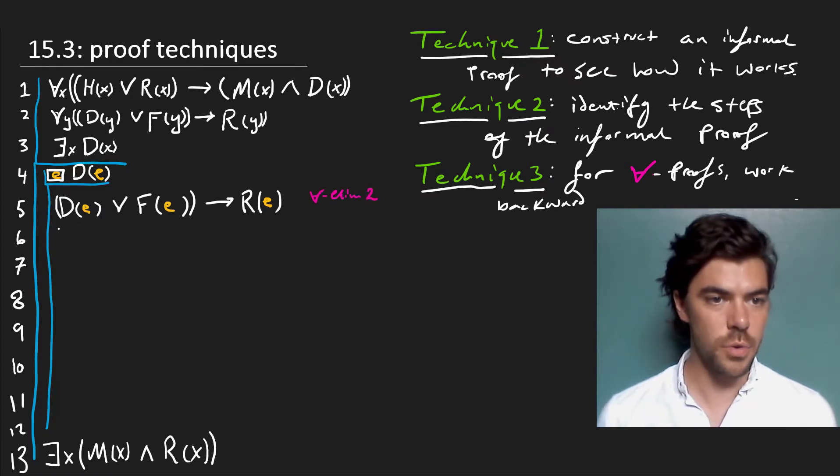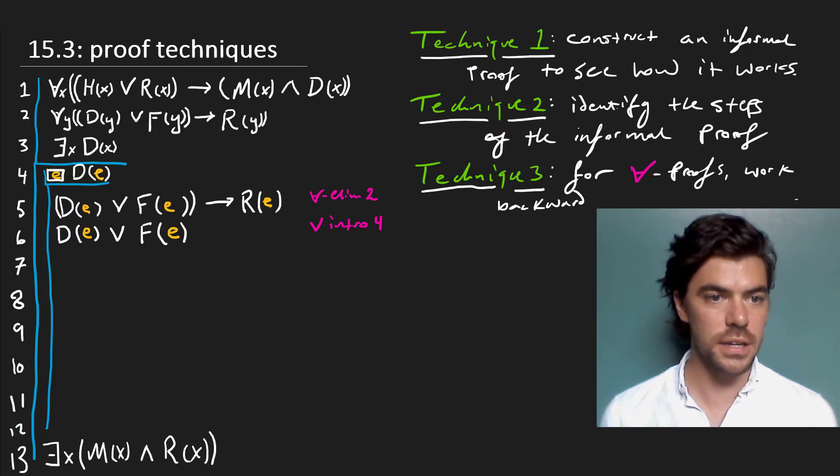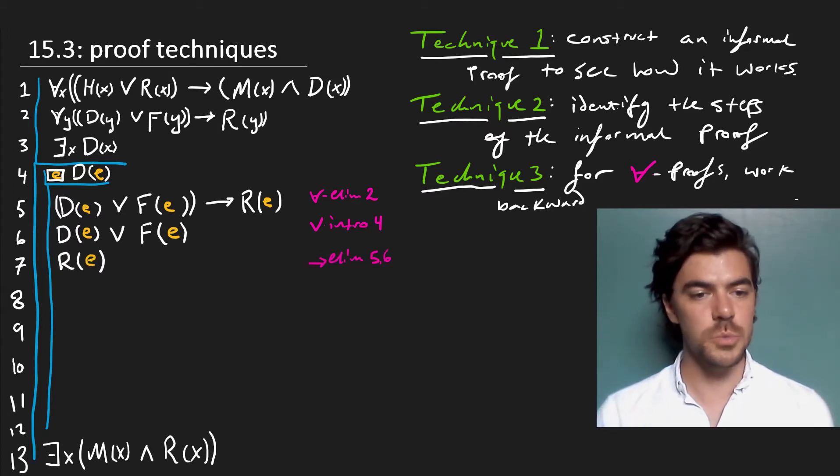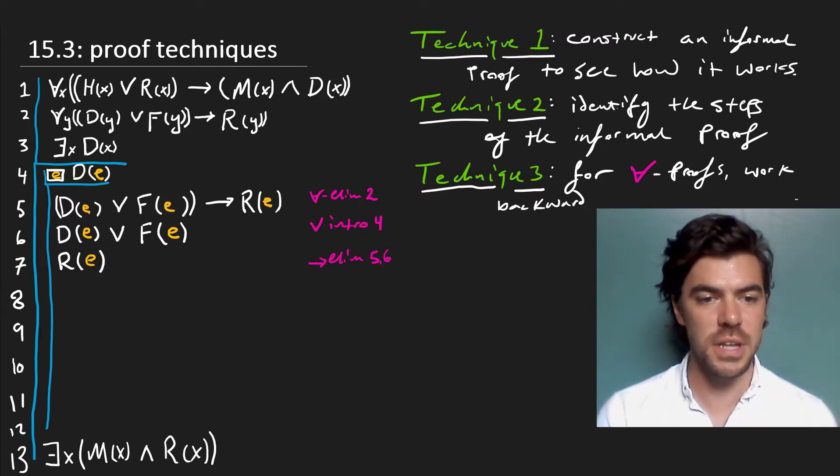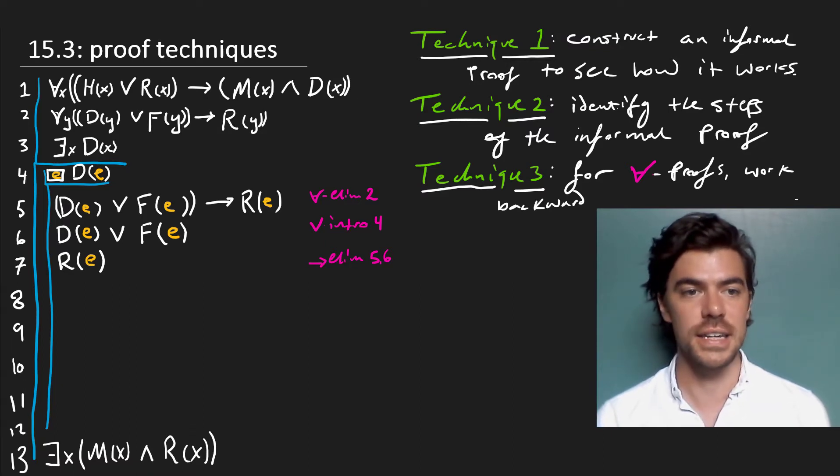Well, from 4, we can straightforwardly get that supposing that E is a D, then E is a D or it's an F. That's just by disjunction introduction. And this is just the antecedent to our conditional sentence on 5. So we can conditional eliminate this down to E is an R. Now this is nice because we can already see that we're headed in the right direction since we want to show that something is an R for our conclusion and we have just such an R, E.